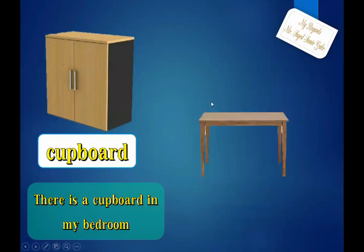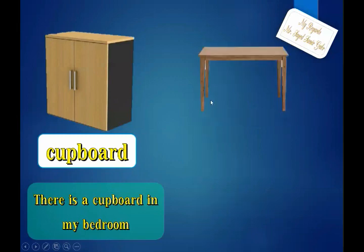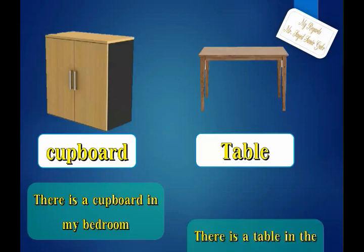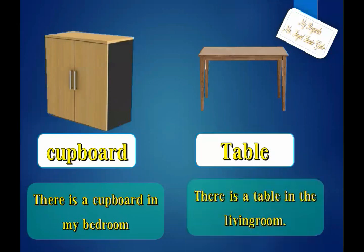Make a guess — it's easy. We can put things on it and it has four legs. Can you guess? Yes, excellent — it's a table. There is a table in the living room. Repeat after me: table. Cupboard. Table.